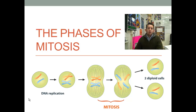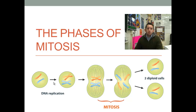Recall that somatic cells are indeed diploid, meaning that they have two versions of every single chromosome — one from the mother and one from the father — starting out with this original generic-looking cell with two chromosomes. Going through DNA replication in interphase — interphase is not a part of mitosis — but in interphase, everything within the cell gets duplicated. The cell grows and prepares for division. We have the S phase, the synthesis phase, where specifically DNA itself is duplicated.